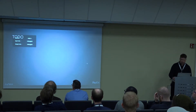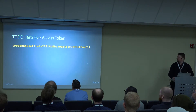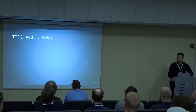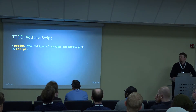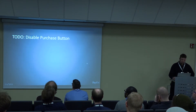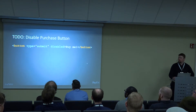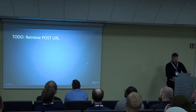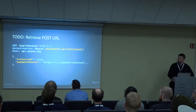So what we need to do: we need to retrieve the access token — that's partly implemented already. We need to add some JavaScript that will initialize our payment button, then we need to disable the purchase button, and then PayX Checkout will enable the button once it is initialized. Then we need to retrieve the post URL — that's the URL we're going to post the payment session to. We do that by performing a GET request on the checkout root resource and we find the URL there.